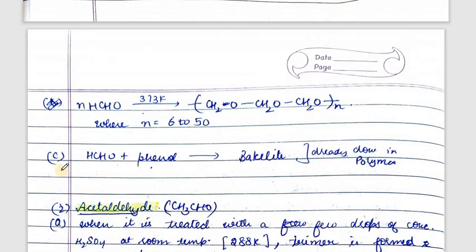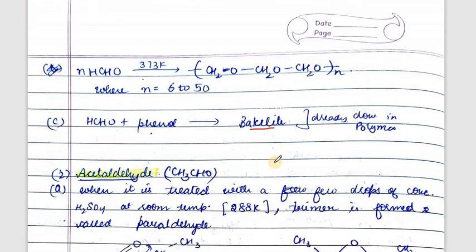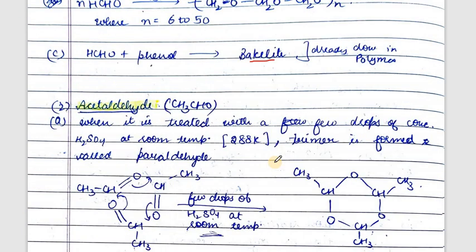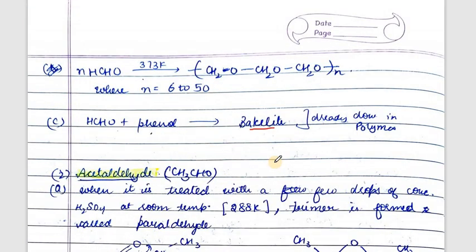When formaldehyde combines with phenol, it gives a cross-linked polymer called Bakelite, as already discussed in the polymers chapter. To summarize: if formaldehyde is allowed to stand at room temperature it forms trioxane; if heated at 373 K it gives para-formaldehyde; and if treated with phenol it gives the cross-linked polymer Bakelite.